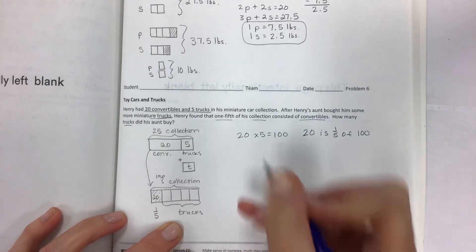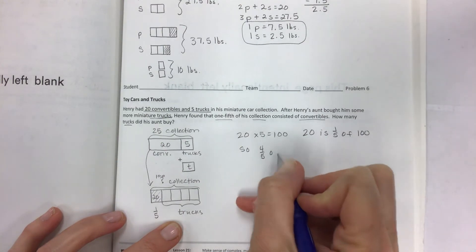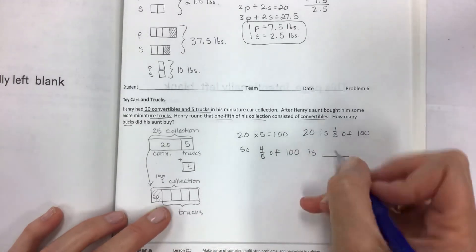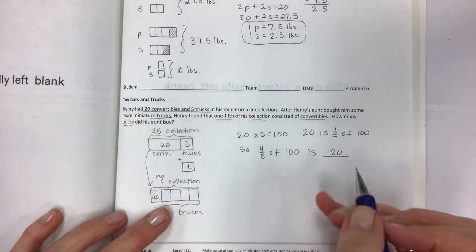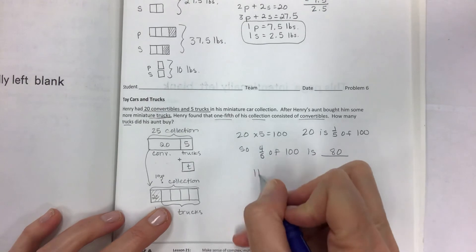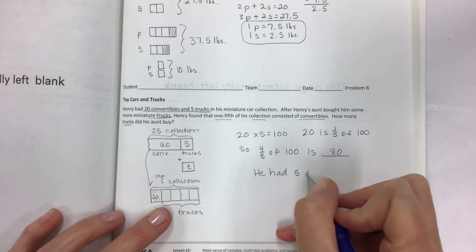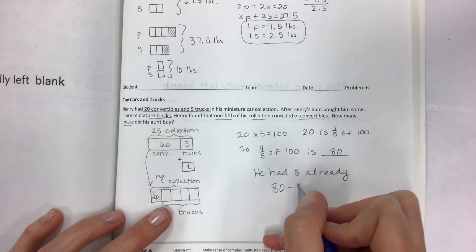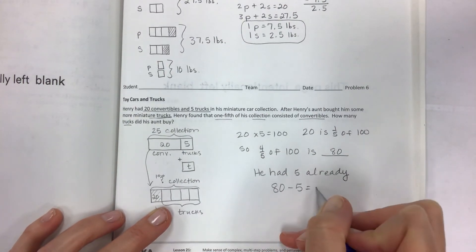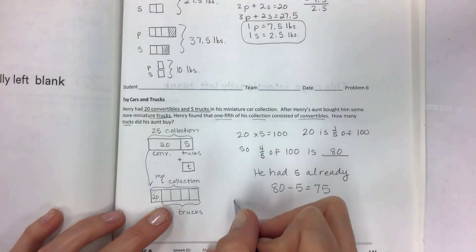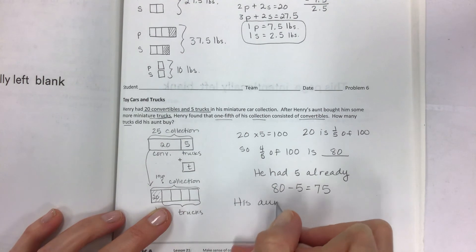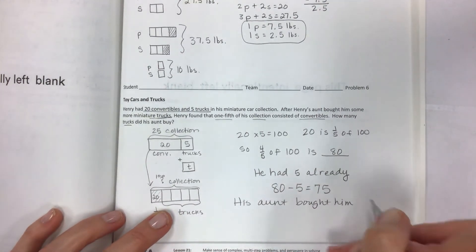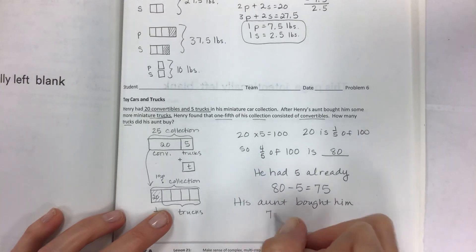Next, the rest of it we have to try to figure out would be the trucks. So four-fifths of 100 is what number? Well that's what's left, that's your 80. And since he had 5 already, 80 minus 5 equals 75. So now we know that his aunt bought him 75 trucks.